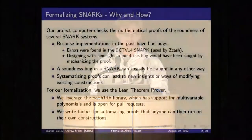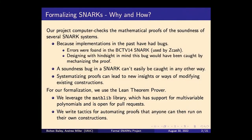A third reason is that it's good to systematize our knowledge of these proofs — maybe it'll lead to new insights or ways of modifying constructions. We use the Lean Theorem Prover, a tool for producing proofs, and we leverage the MathLib library, which is an open-source project covering a lot of undergraduate-level math. In particular, it has support for multivariable polynomials. Our approach is to write tactics and automate these proofs so people can run them on their own SNARK constructions.